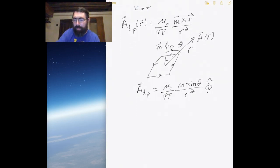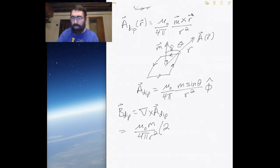Now if I want to calculate the magnetic field from that, then I would take the curl of the magnetic potential. So I would end up with mu zero m over 4 pi r squared, two times the cosine theta in the r direction plus sine theta in the theta direction.